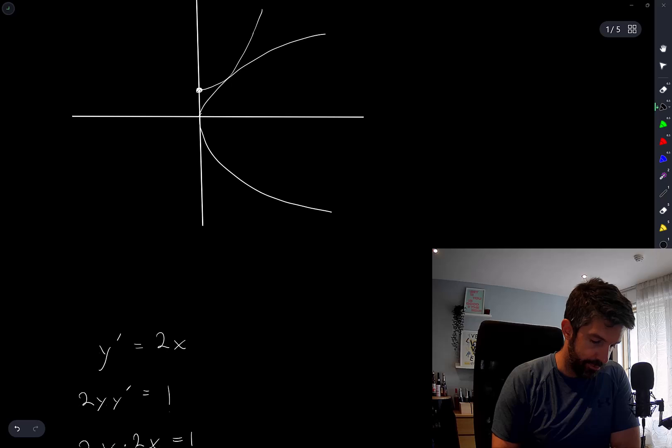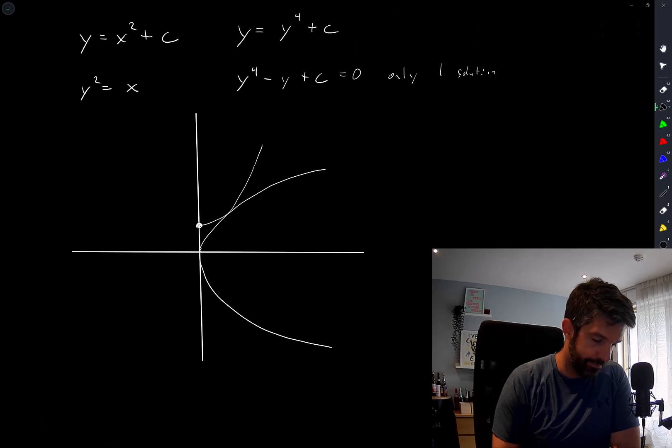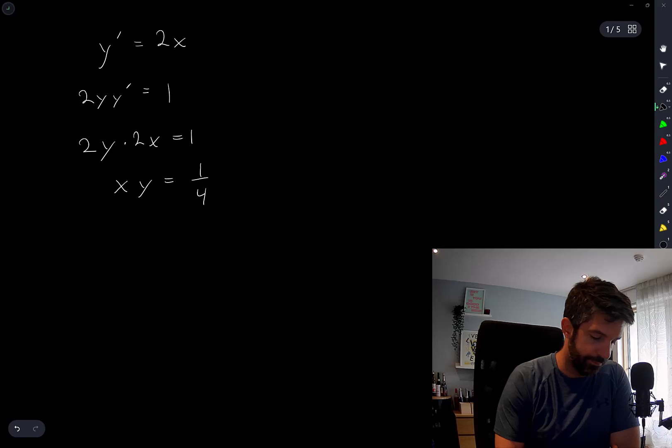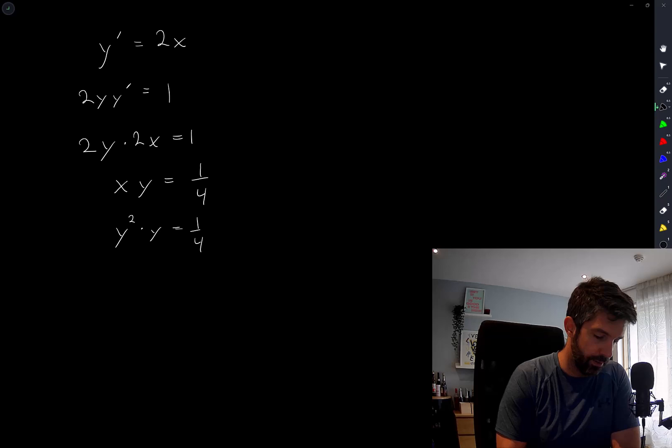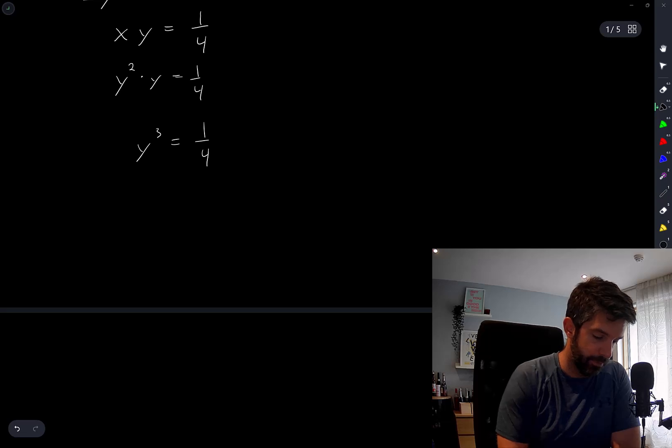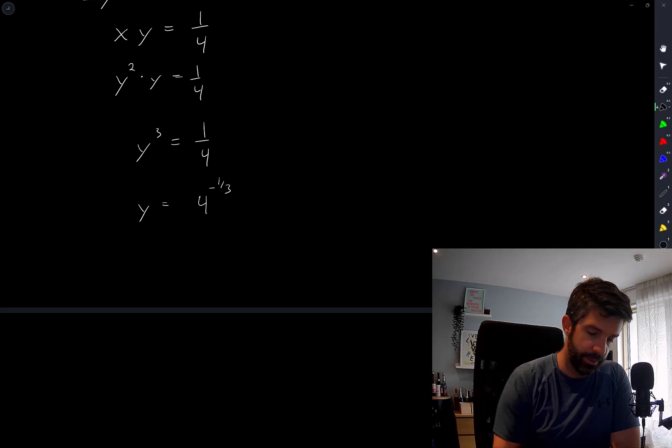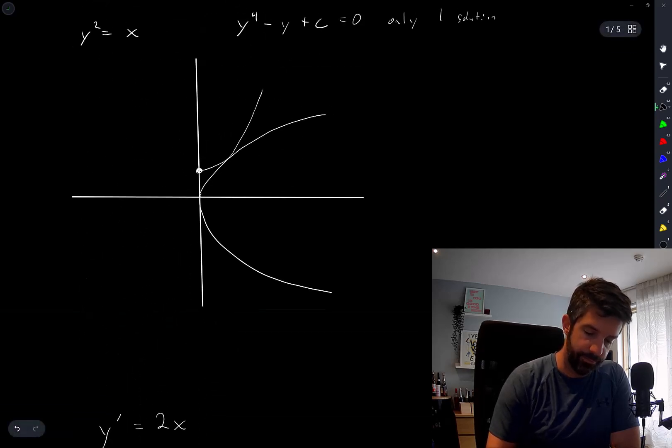And that gives me, well, y squared is equal to x. So y squared times y is equal to 1 over 4. So y cubed is equal to 1 over 4. So this says that y is equal to 4 to the negative 1 over 3. So that is the, that'll give me the y coordinate of this point.